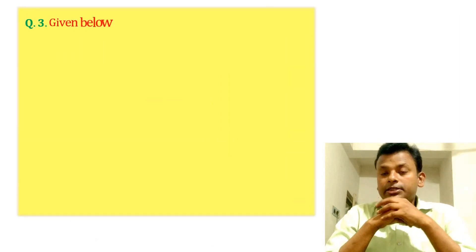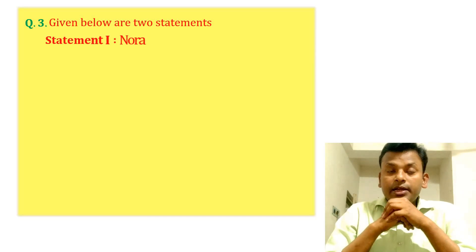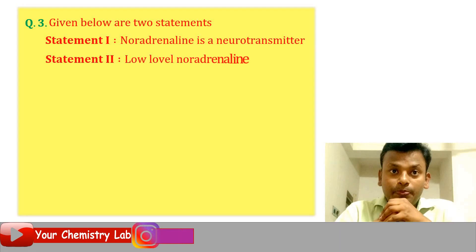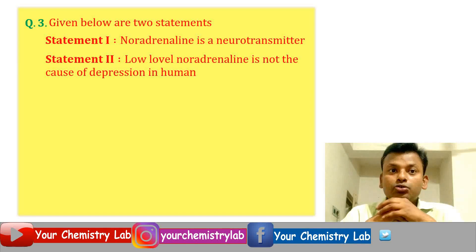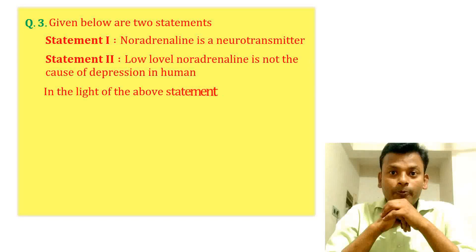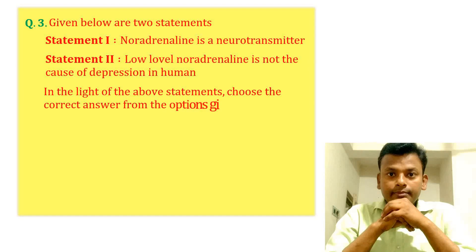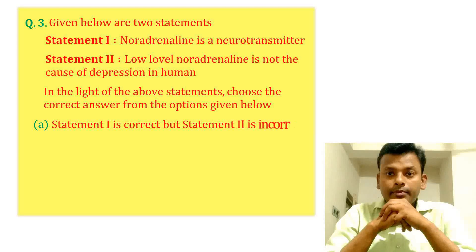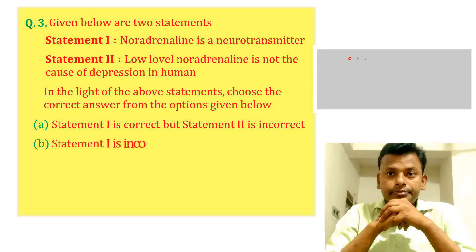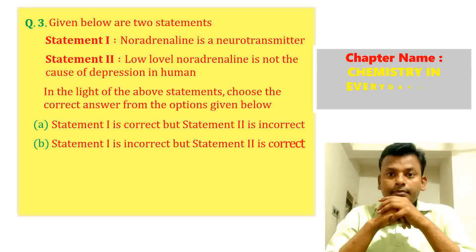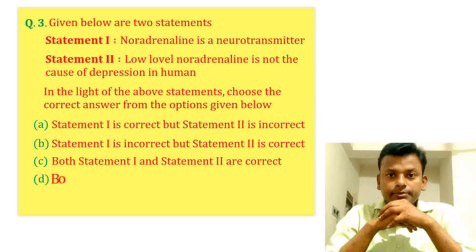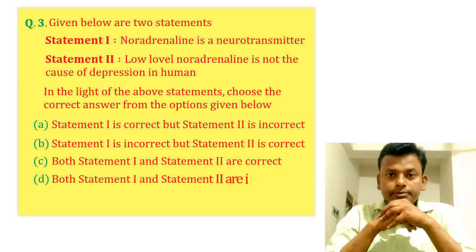Question 3: Given below are two statements. Statement 1: Noradrenaline is a neurotransmitter. Statement 2: Low level of noradrenaline is not the cause of depression in humans. In light of the above statements, choose the correct answer from the options given below: option A, option B, option C, option D.